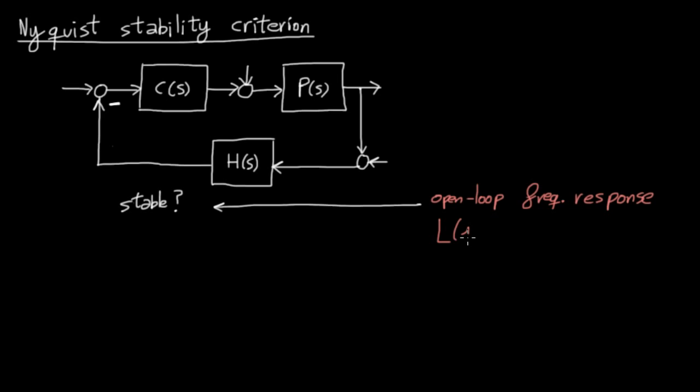Remember that by open loop frequency response I mean L, that is, the multiplication of the frequency responses of all the elements throughout the loop. In this case, L is equal to C, P, H, so the criterion will tell us whether this loop has unstable poles just by looking at C, P, H.